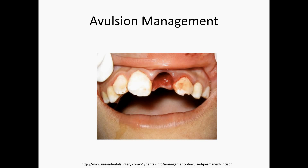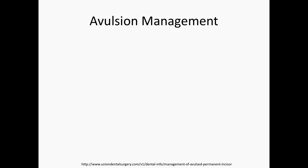If the tooth has not been replanted, clean the tooth with saline ensuring not to rub the PDL. Administer local anesthesia, irrigate the socket with saline, replant the tooth with slight pressure, and apply a flexible splint.